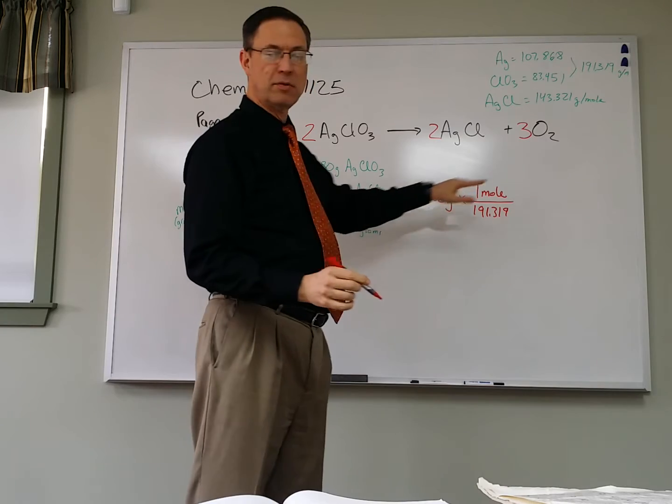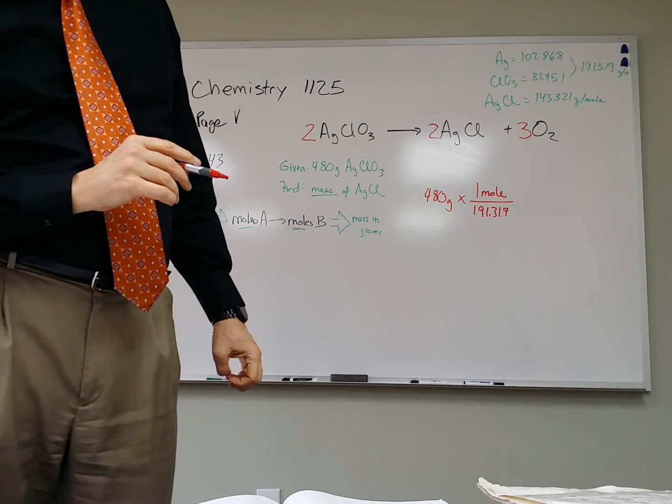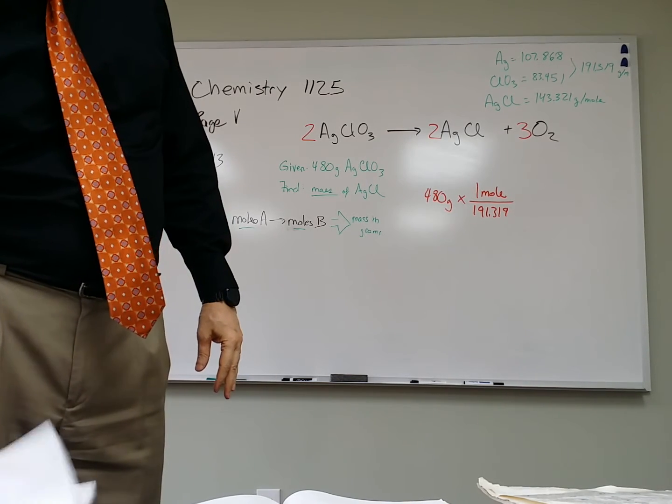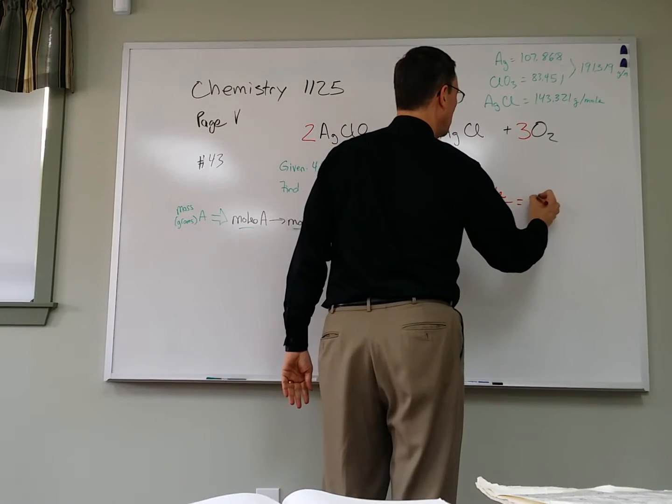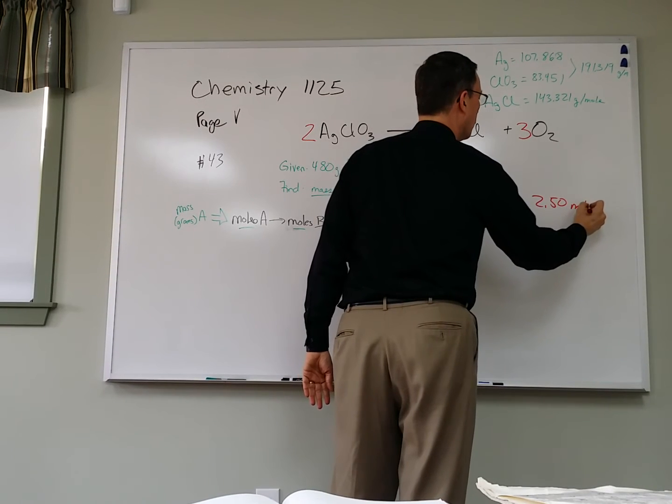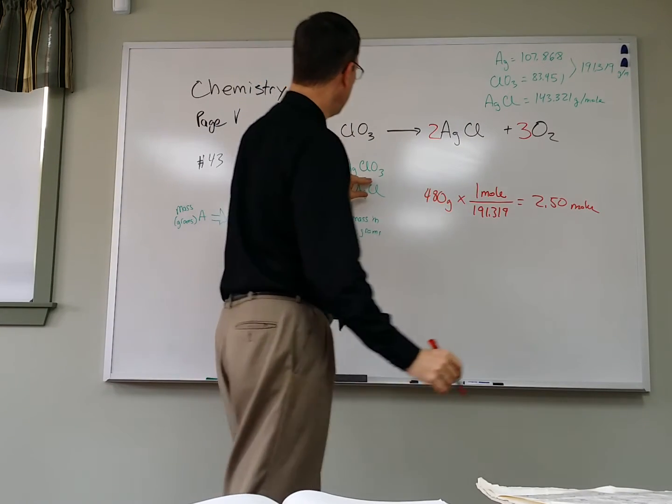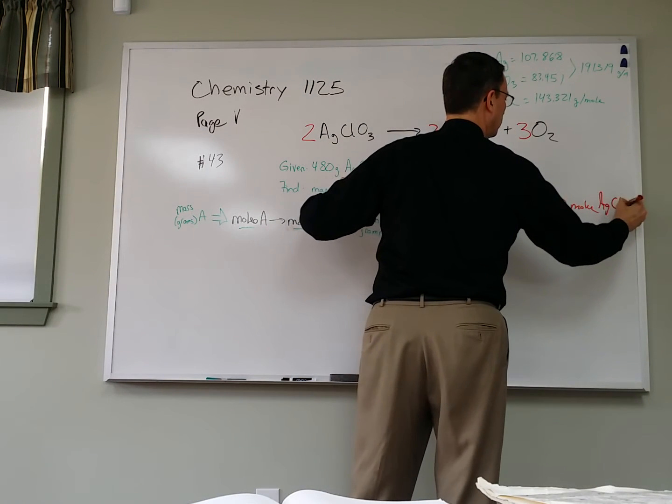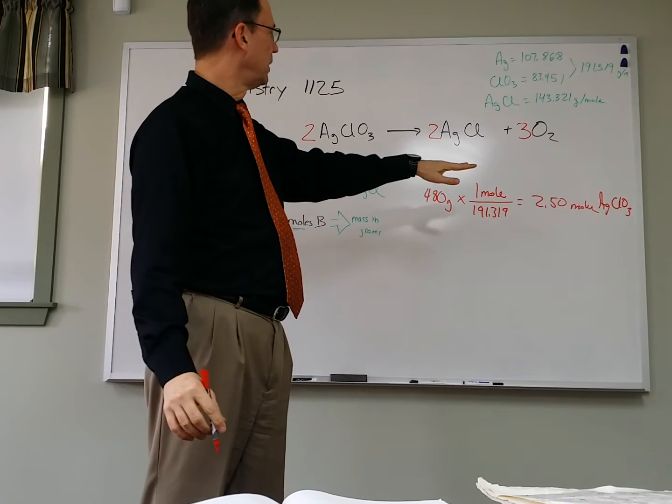And then when we divide that, and I'm going to cheat here and look at the answer key just so that I get the exact answer that you're supposed to get. So it works out to be 2.50 moles. And that's moles of AgClO3. Sorry, it's a little sloppy there, but I wanted to label it so we don't forget what that is.